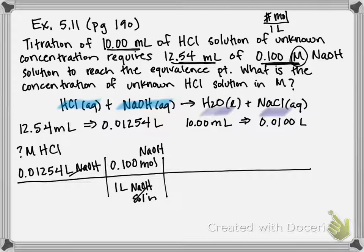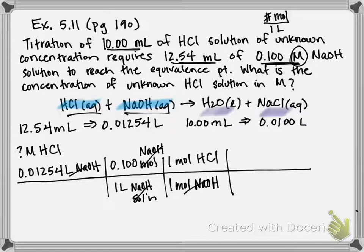So to write a mole-mole ratio for this to get from sodium hydroxide to HCl, it's going to be one mole sodium hydroxide on bottom because that's what I want to cancel. And on top, it would be one mole of HCl. And those two numbers we get directly from our balanced equation.